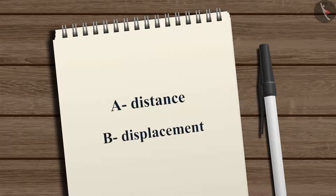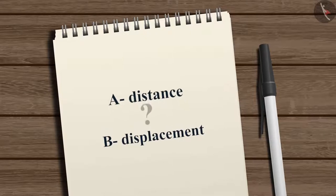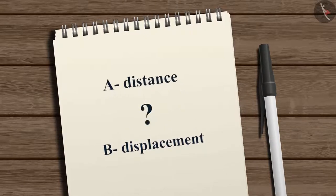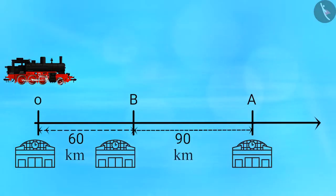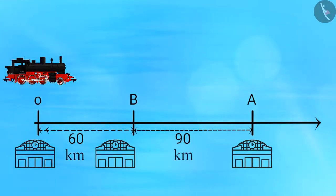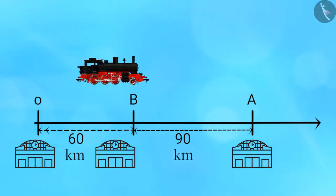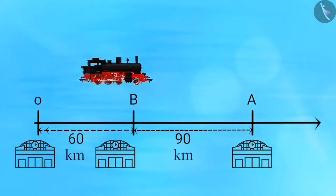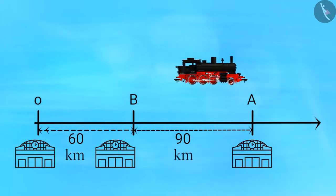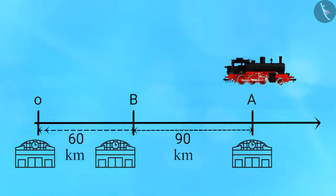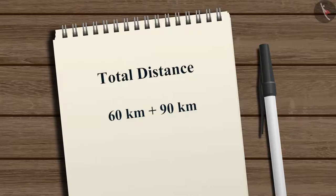There are two physical quantities related to path measurement: distance and displacement. Suppose a train starts its journey from station O, considered as a reference point. Its first stop is 60 kilometers away at station B, then it travels 90 kilometers to reach station A. The total distance traveled by the train is 60 plus 90, which is 150 kilometers.